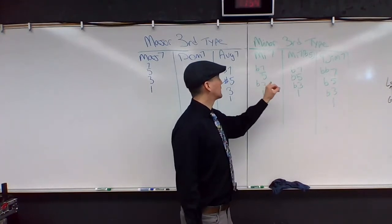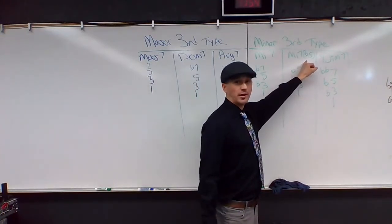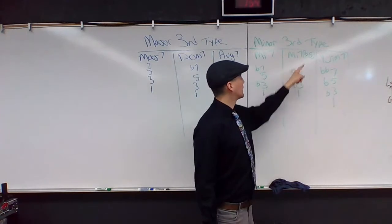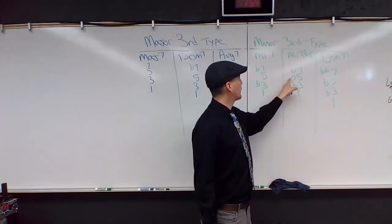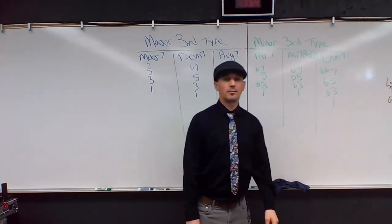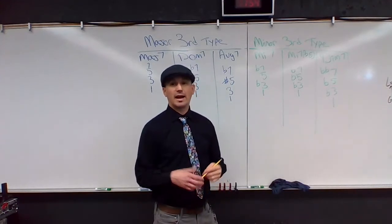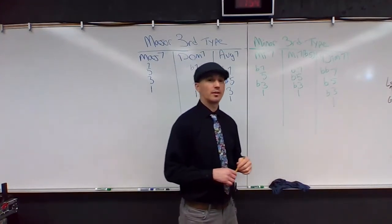One, flat three, five, flat seven. Minor seven, flat five. So it's the same as a minor seven, but it has a flat five. One, flat three, flat five, flat seven. And this is also known as a half diminished chord. You may hear people call it that.